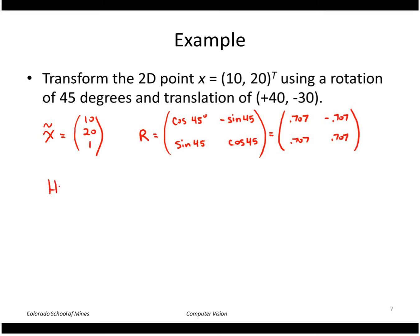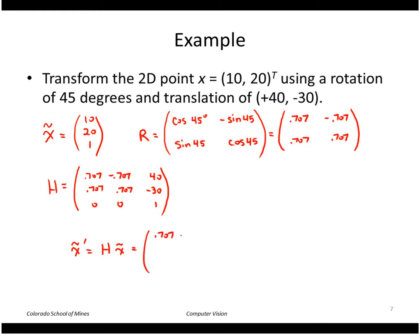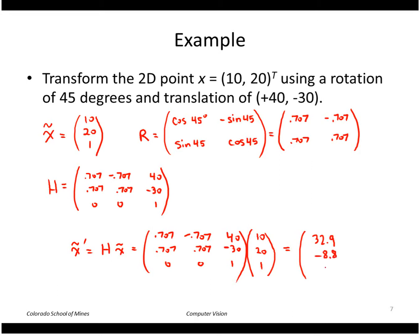We'll put that into a 3 by 3 matrix with the rotation matrix in the upper left, and the translation vector — in this case 40, minus 30 — in the last column. Multiplying H times our point, this 3 by 3 matrix is multiplied by our point which is 10, 20, and 1. That comes out to be about 32.9, minus 8.8, and 1.